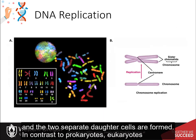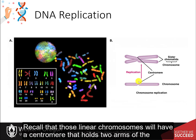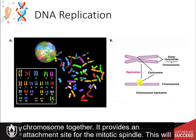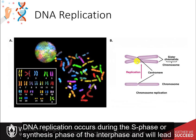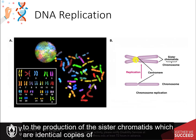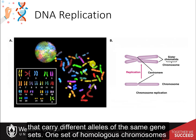In contrast to prokaryotes, eukaryotes typically have multiple linear chromosomes that make up their genetic material. Those linear chromosomes will have a centromere that holds the two arms of the chromosome together, providing an attachment site for the mitotic spindle. This allows the replicated chromosomes to be separated from one another after replication. DNA replication occurs during the S phase, or synthesis phase of interphase, and leads to the production of sister chromatids, which are identical copies of one another — not to be confused with homologous chromosomes that carry different alleles of the same gene sets.